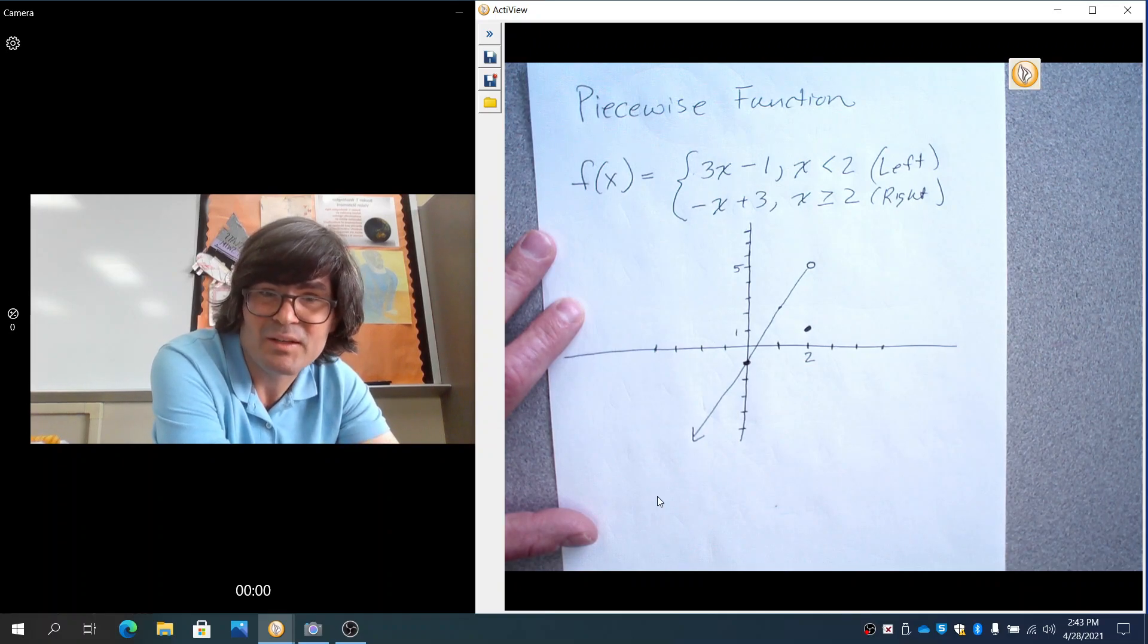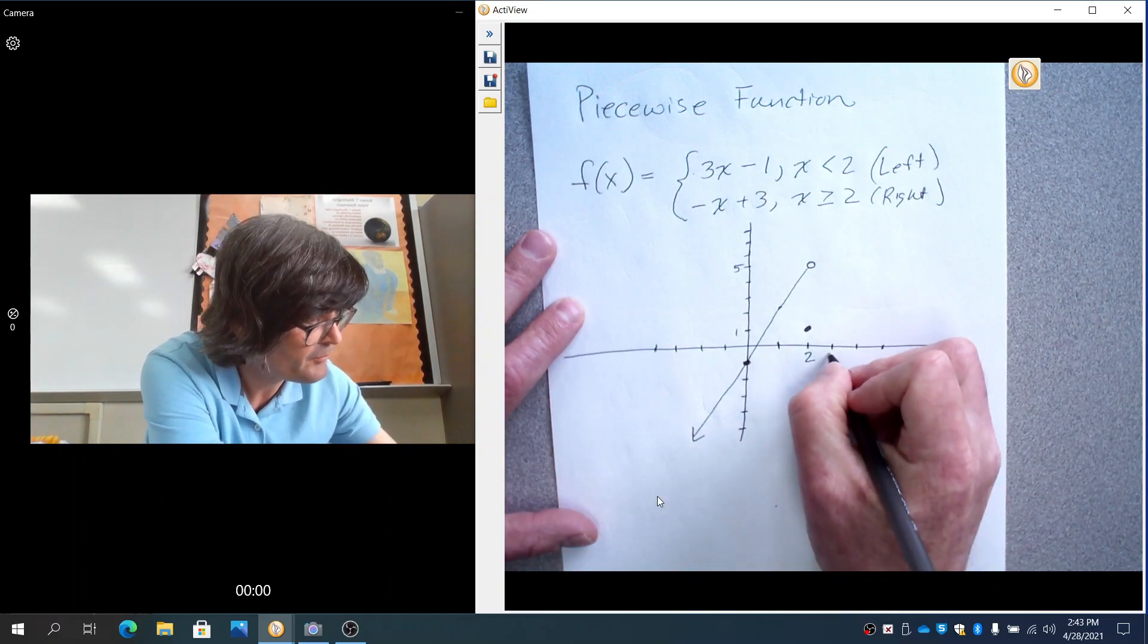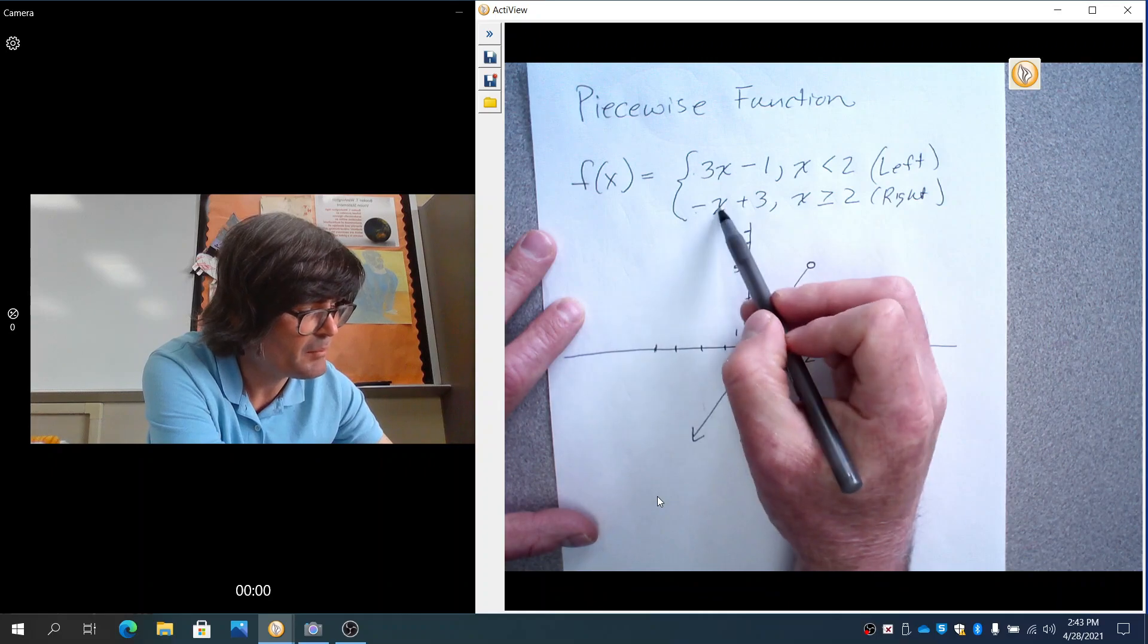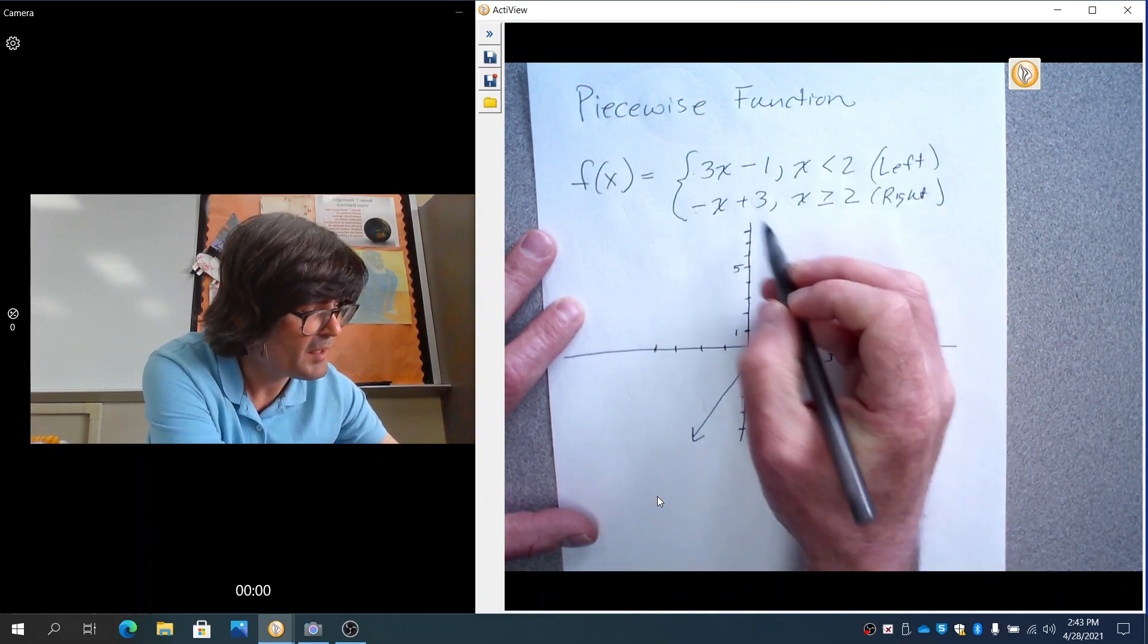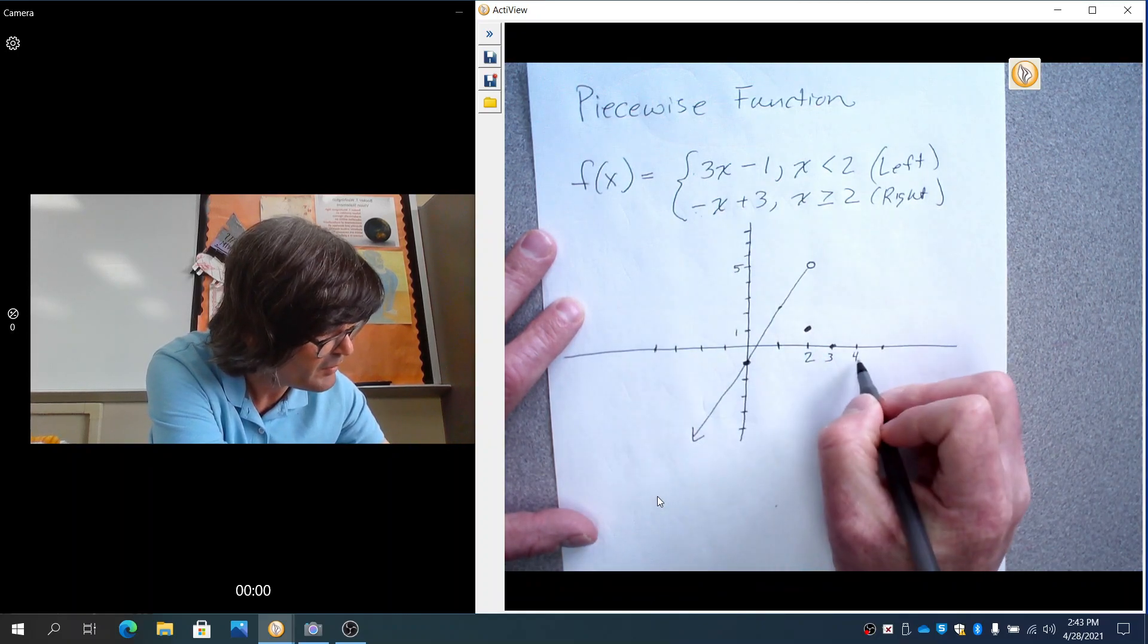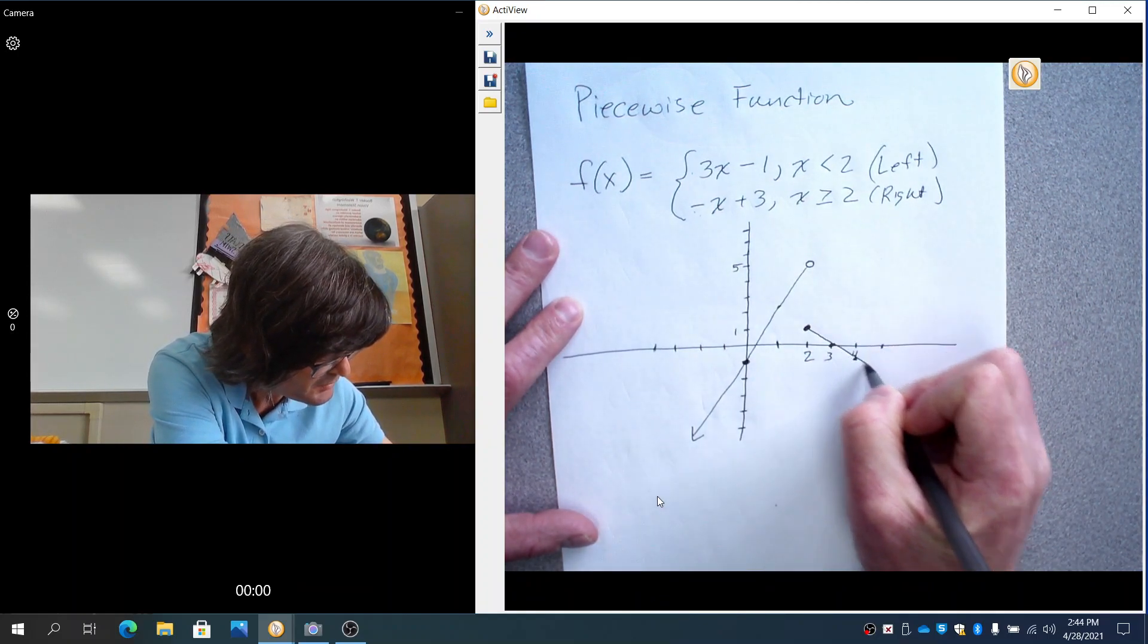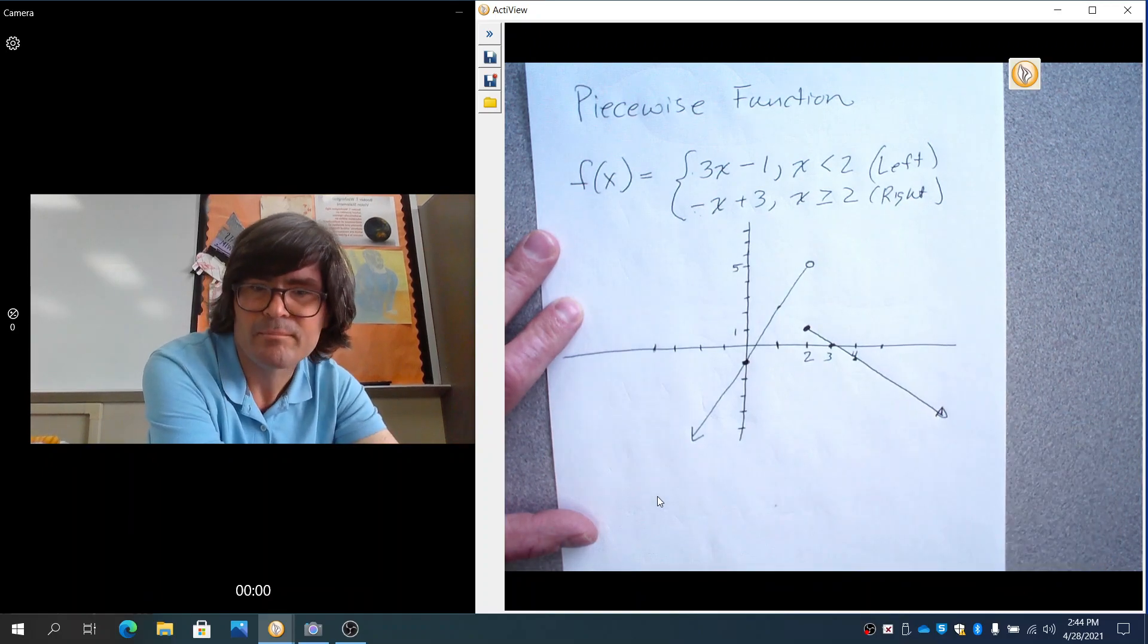And now let's just pick another point that's to the right of 2, maybe 3. Minus 3 plus 3 would be 0. You could do that one. You could do 4. Minus 4 plus 3 is negative 1. That would be right here. And you can see this graph just does that.